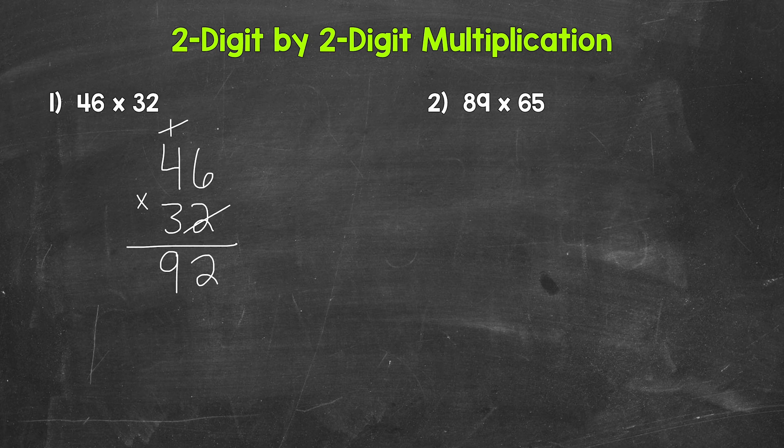Now we have 46 times 30. So we're moving over to that three in 32, which is in the tens place — it has a value of 30. So we need a zero right here. Again, we're moving over to the three in the tens place; technically we're doing 46 times 30, so we need that zero there.